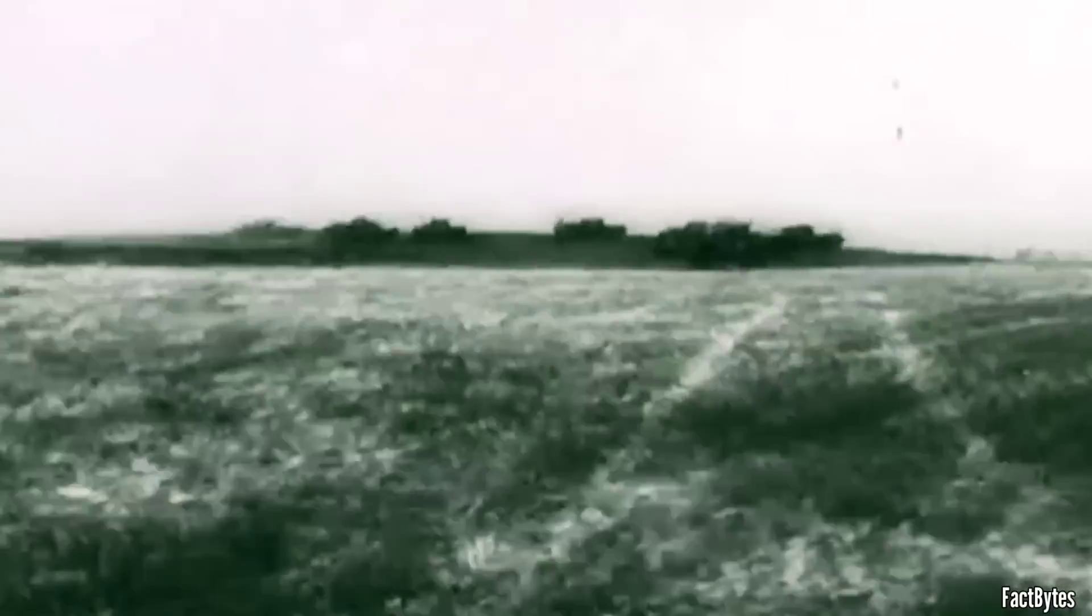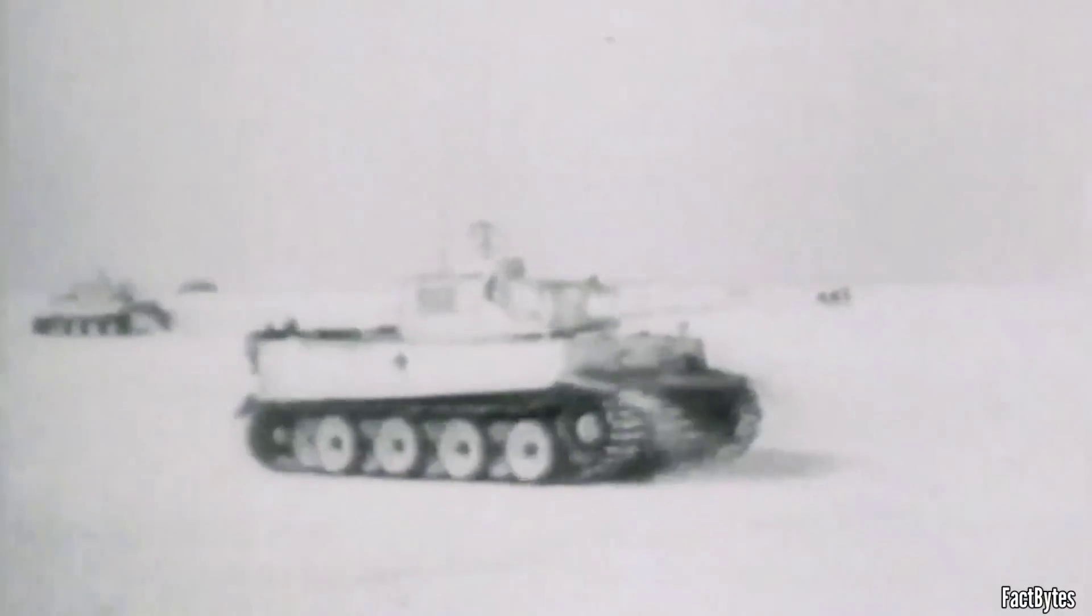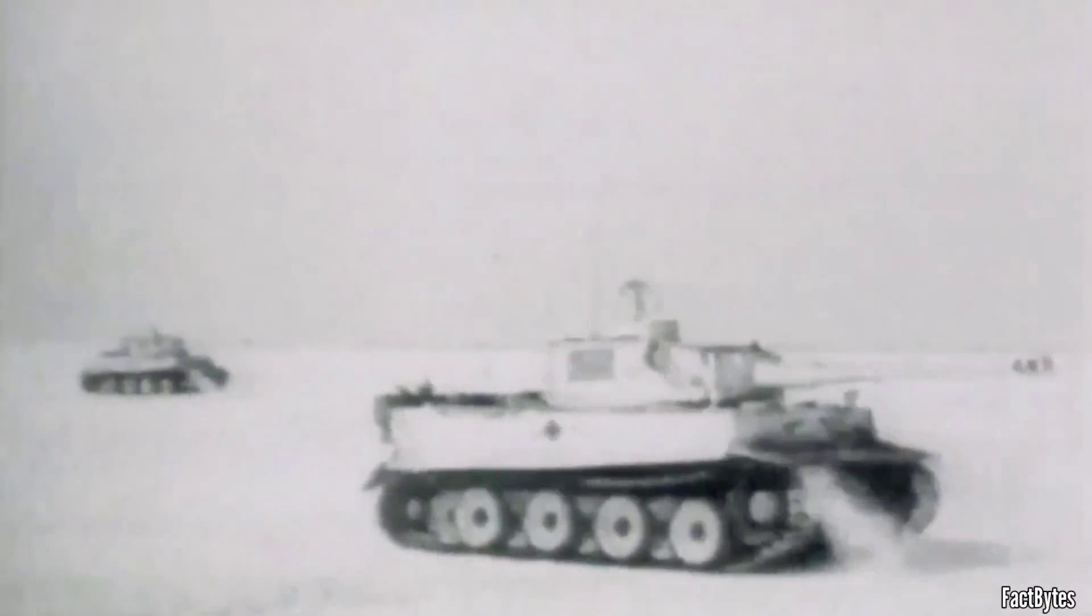On open battlefields with unobstructed views, the Tigers and Panthers held superiority. Their long-range guns and excellent optics allowed well-trained German gunners to easily target and eliminate enemy tanks with impunity. This combination of firepower and precision rendered German armored units highly effective in engagements where distance and clear visibility were advantageous.